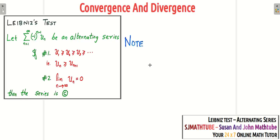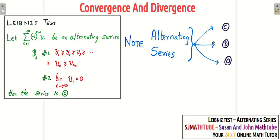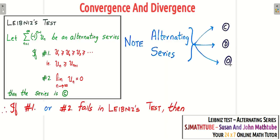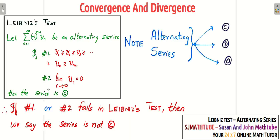One important note: alternating series have three possibilities, unlike positive-termed series. If condition one or condition two fails, you should not say the series is divergent — you should simply say it is not convergent. If both conditions are satisfied, it is convergent; if either fails, there are two remaining possibilities, so you can only say the series is not convergent.